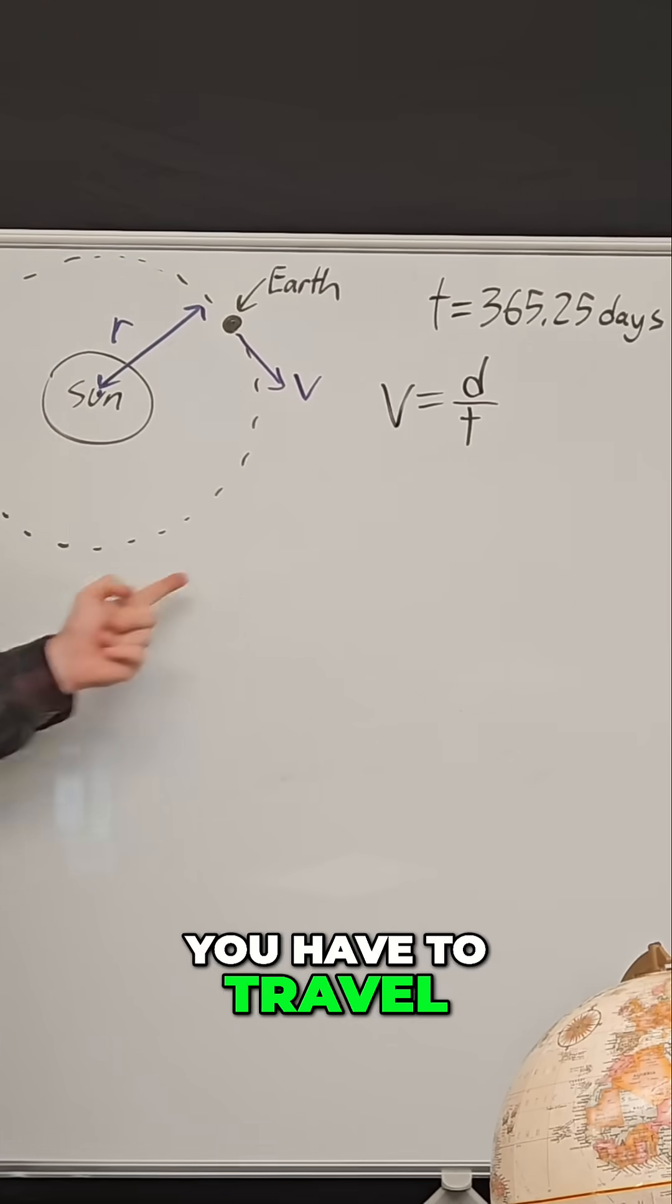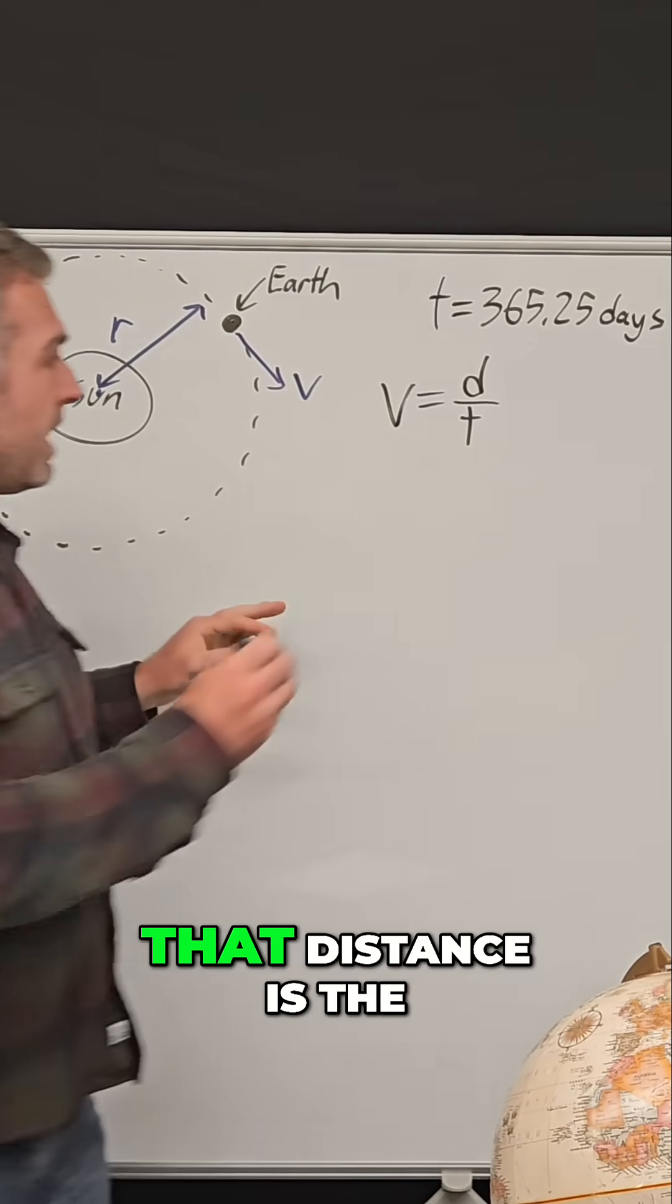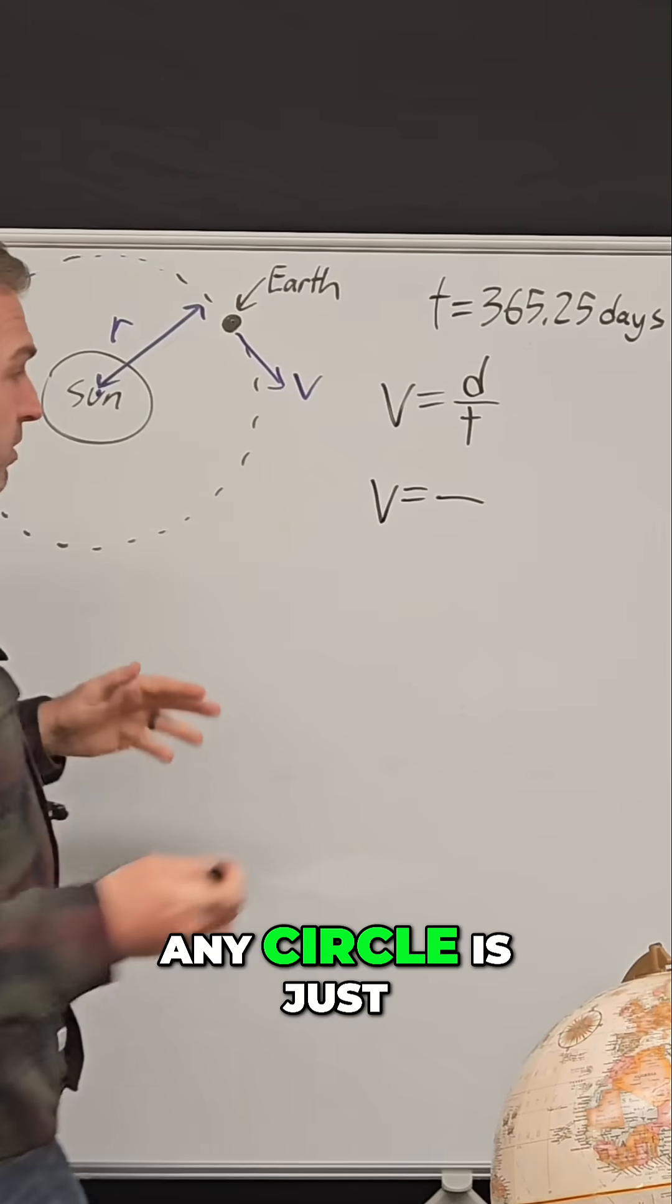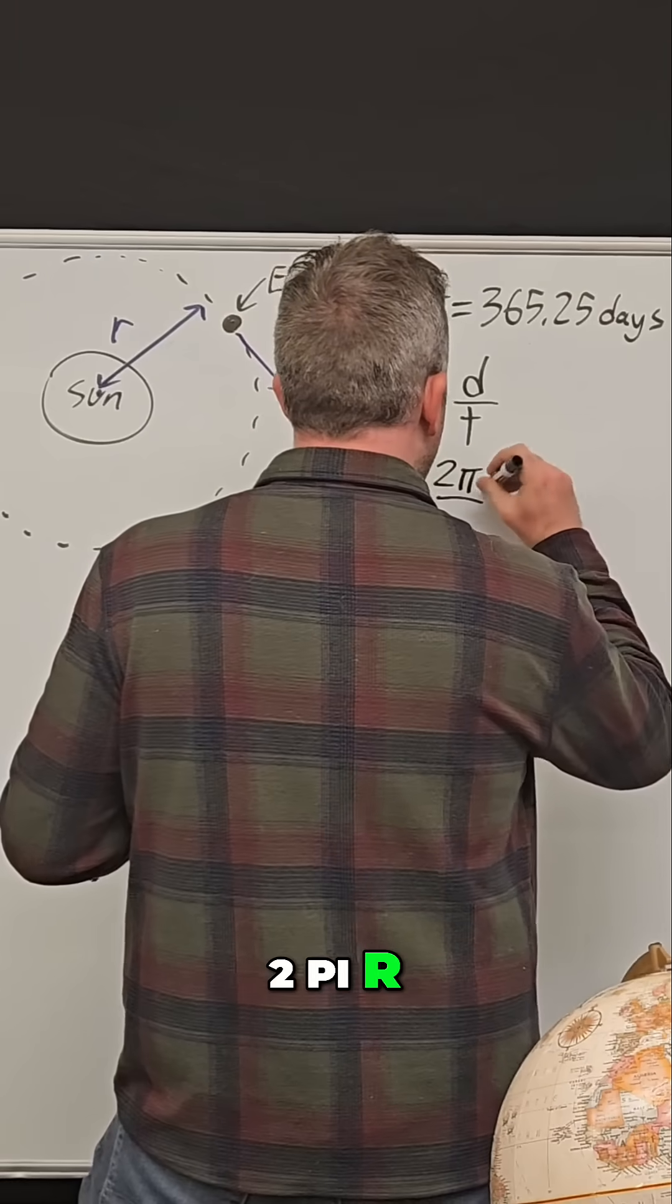What is the distance you have to travel to go around a circle? Well, that distance is the circumference of the circle. And the circumference of any circle is just 2 pi r, right?